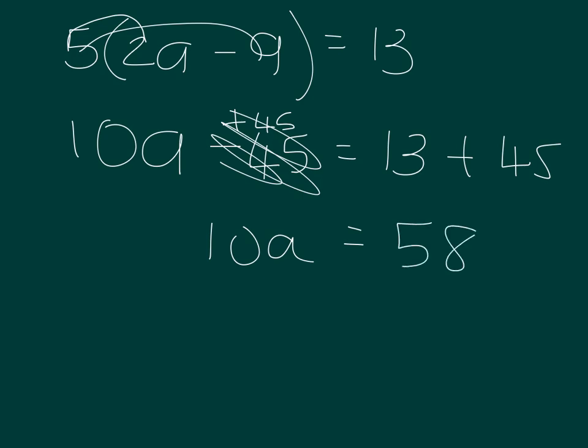And we divide that by 10, and we divide that by 10, and that cancels that out. So a is equal to 10 goes into 58, goes 5 times, 5.8.